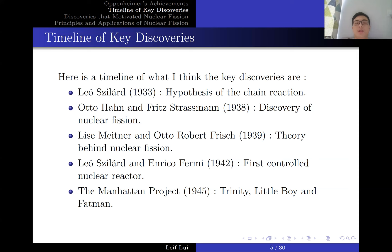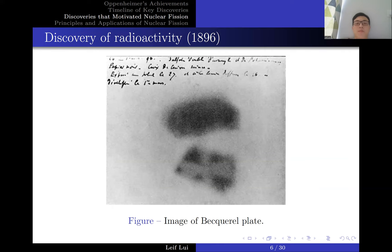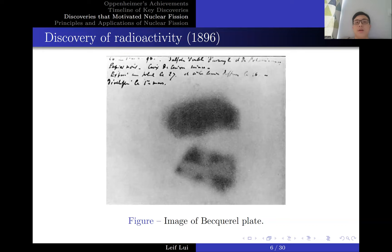Let's talk about the discovery of radioactivity by Henri Becquerel. Becquerel actually made this discovery by accident. He placed a photographic plate on top of a uranium salt sample and realized that in the vicinity of the uranium salt, the plate actually blackened. He knew the plate would only blacken if it was exposed to some kind of radiation. He initially thought this was a mistake and placed the photographic plate elsewhere, but found that only within the vicinity of the uranium salt did this blackening occur. He was credited for the qualitative discovery of radiation.